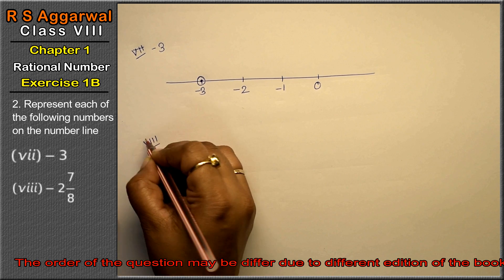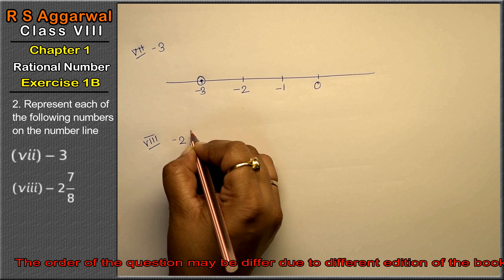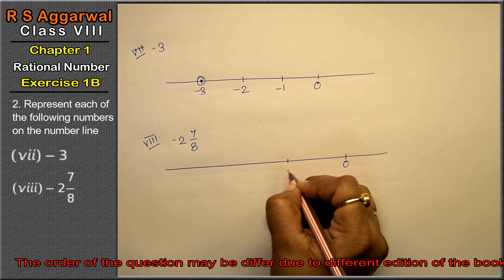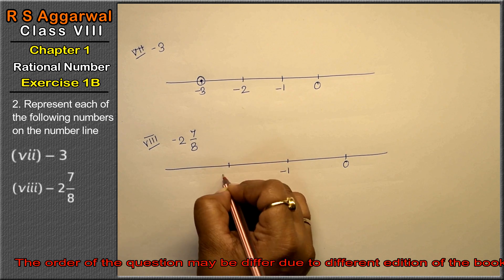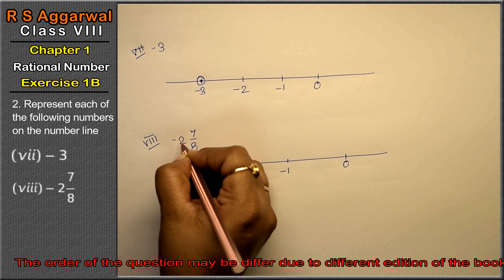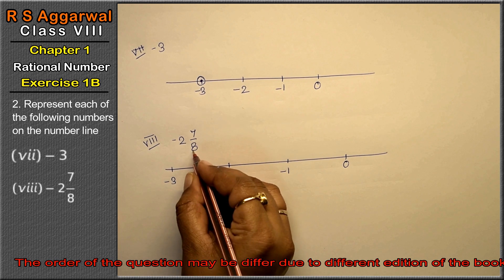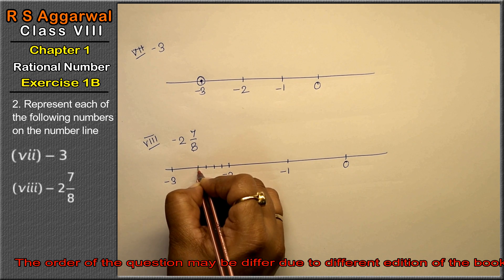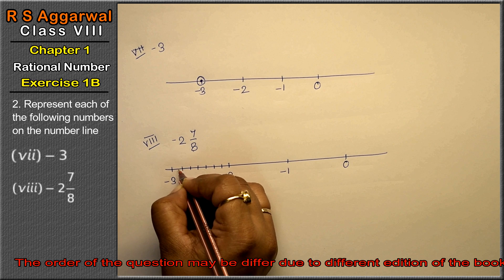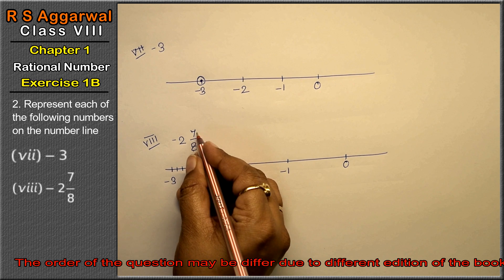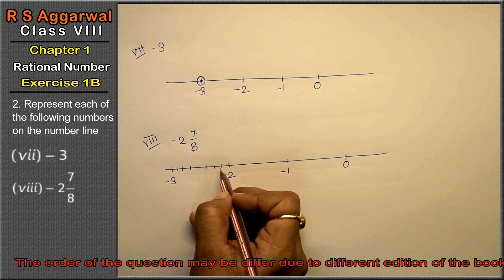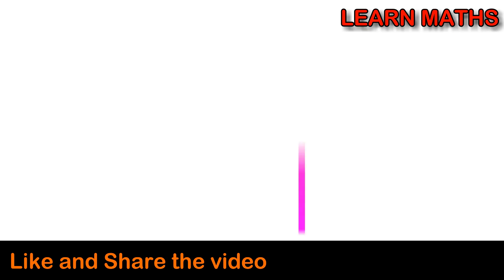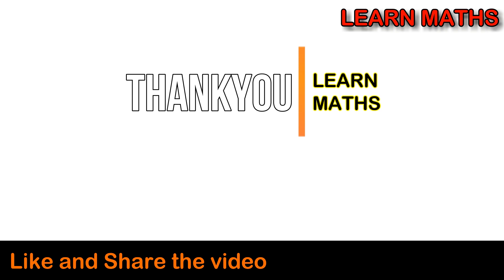Let's do 8th part. 8th part is minus 2 whole 7 upon 8. Dekho - 0, thoda bada le rhi hoon kyunki 8 parts karne honge. Minus 2 likha hai to minus 2 ke baad 8 parts karo - jitna denominator hai utte parts: 1, 2, 3, 4, 5, 6, 7, 8. Hume kaunsa part chahiye - jitna numerator hai, 7th part pe point lagao: 1, 2, 3, 4, 5, 6, 7. This is the answer.